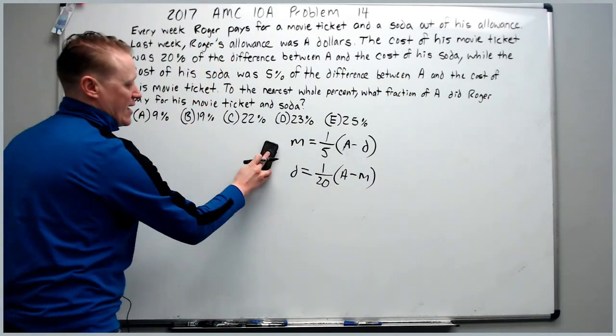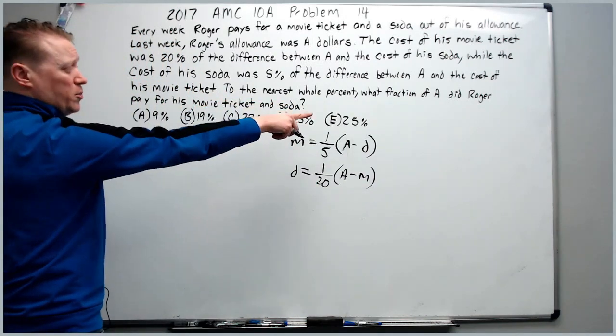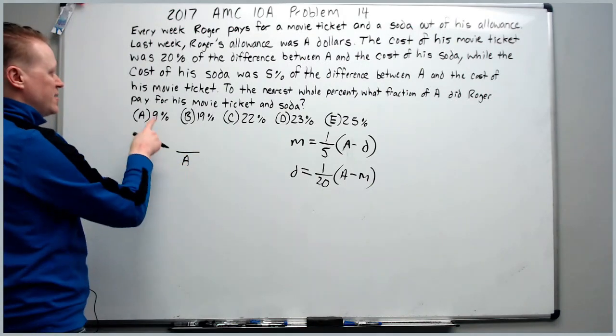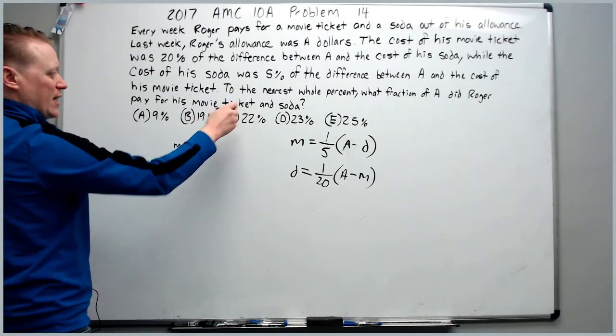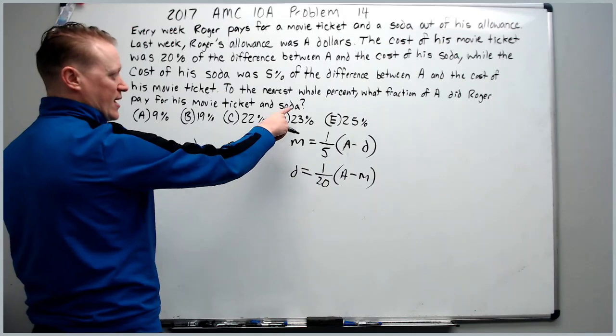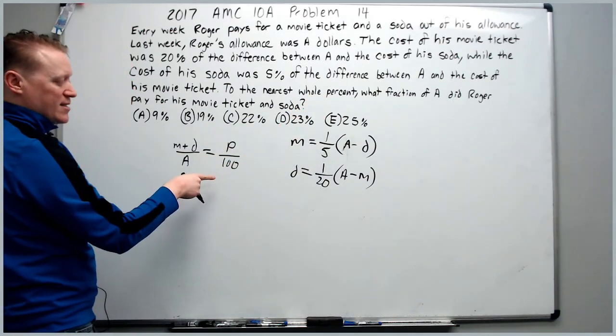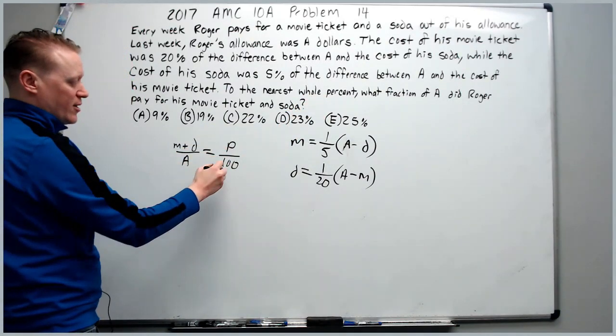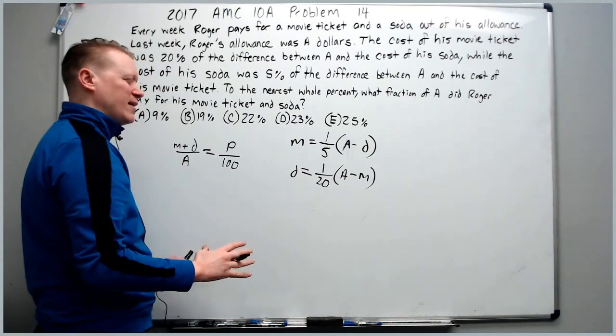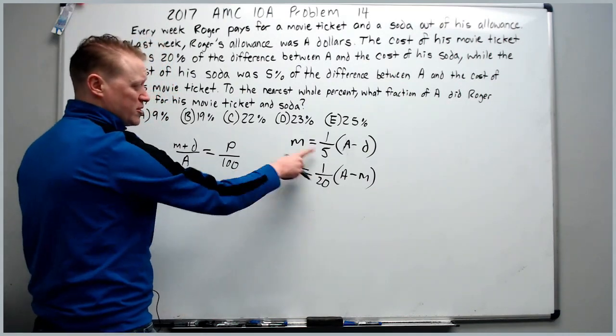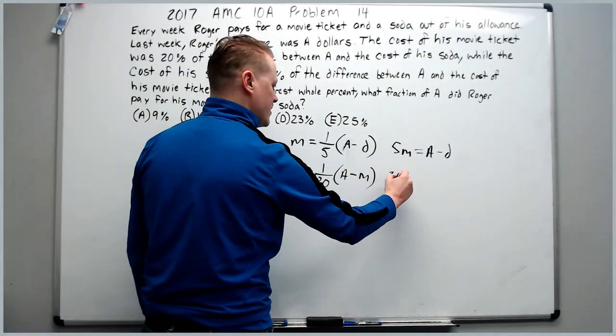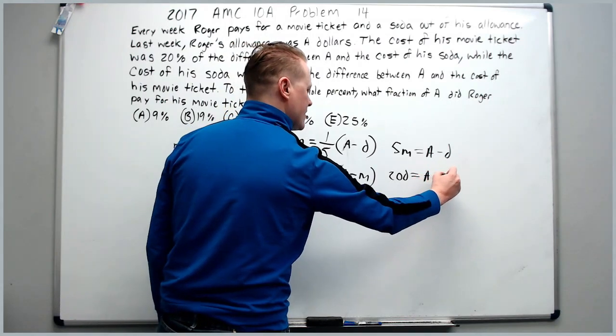Next it says the cost of his soda, which we're calling D, was 5% or 1/20 of the difference between A and the cost of his movie ticket, which is M. Finally, it's going to ask us, to the nearest whole percent, what fraction of A did Roger pay for his movie ticket plus his soda? So we want this to be equal to P/100. What's next? Just start manipulating. Don't distribute 1/5. Get rid of it. Multiply by 5: 5M = A - D. Over here times 20: 20D = A - M.